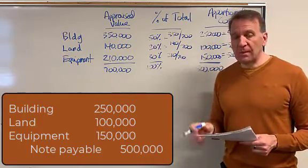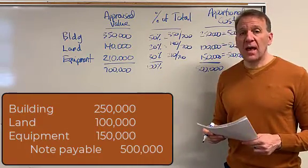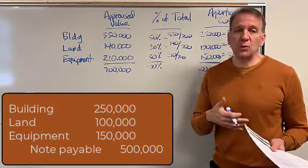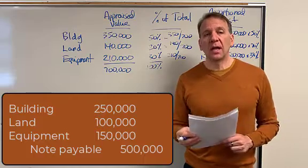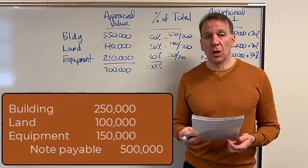And then our credit will be for the full $500,000. And it will either be to cash or probably to a note payable because we probably had to borrow in order to purchase this. We probably have a loan on this.